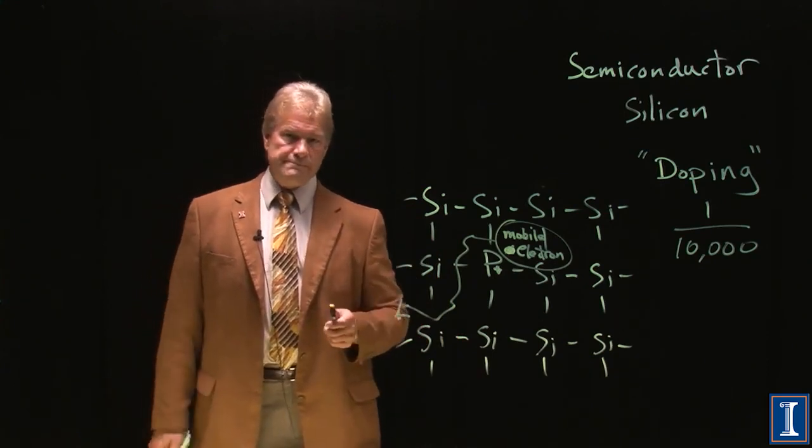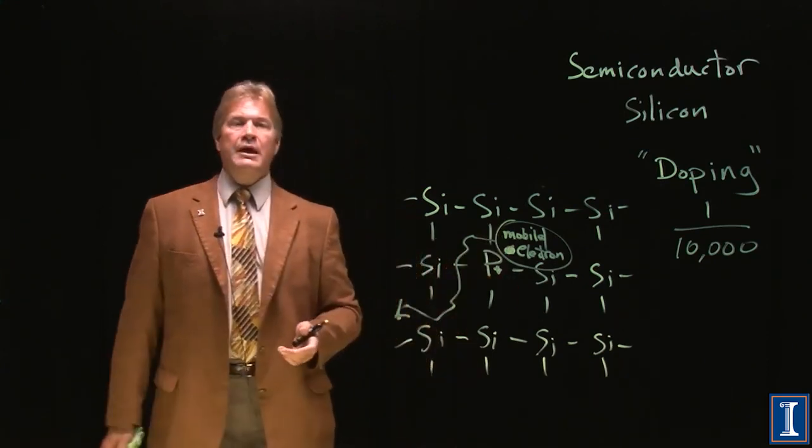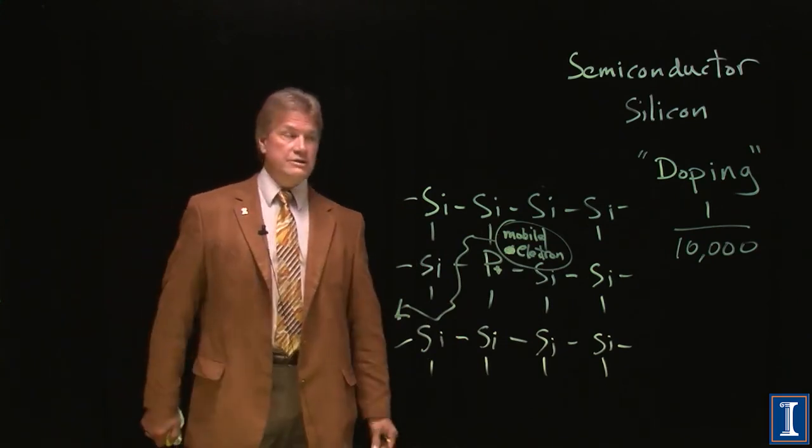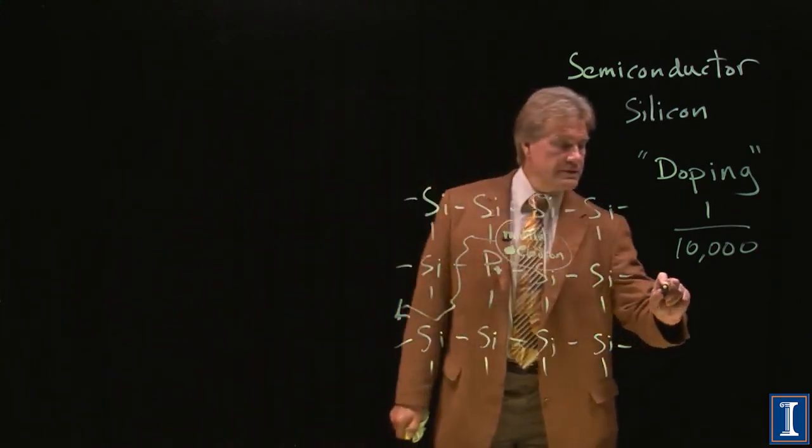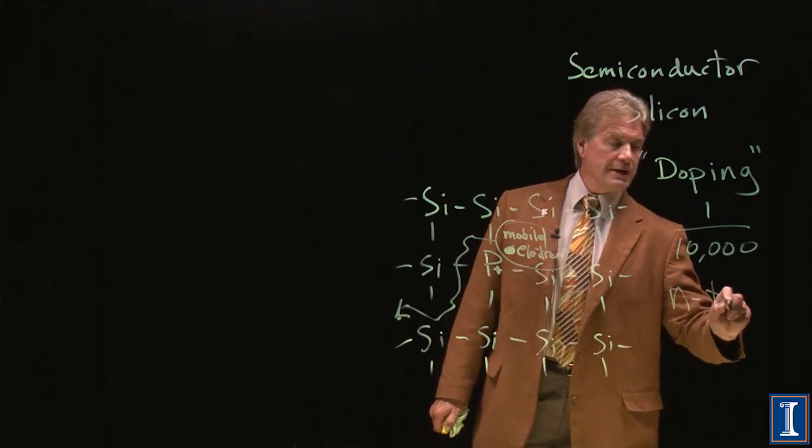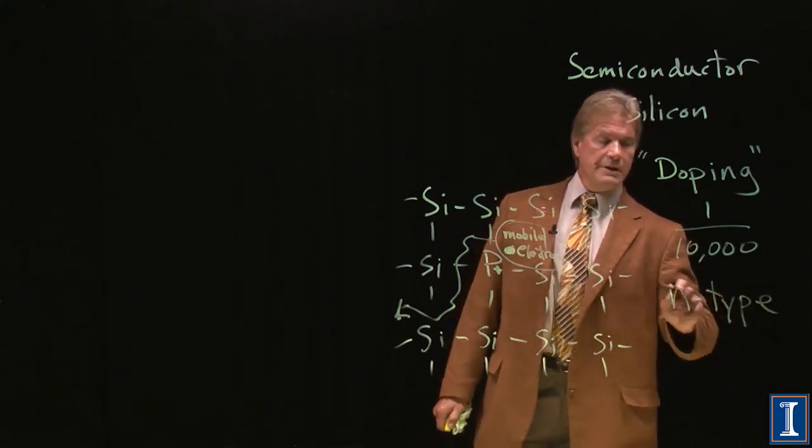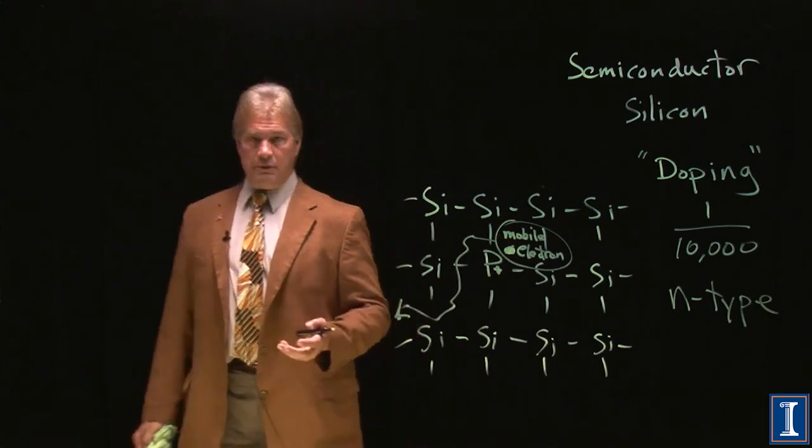Great. We've now made slightly impure silicon, and it has a higher conductivity. In fact, we call this type of silicon N-type. N-type because it has negative charge carriers.